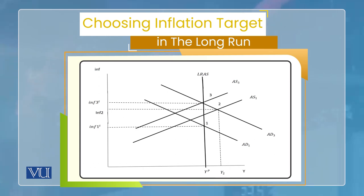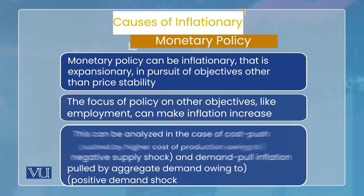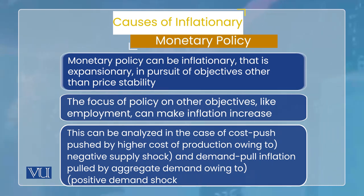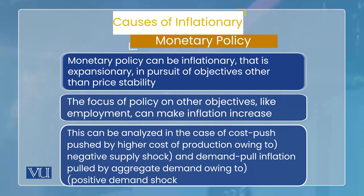Ab yeh clear ho gaya ke central bank kya kar sakta hai aur kya nahi. Ab dekhte hain ke inflationary monetary policy kab central bank ki ho sakti hai. Jab central bank ka prime concern inflation ka control hai, to inflation central bank ki apni policy se tab create hoga jab central bank ka focus inflation se hatt ke kisi aur variable — jaise exchange rate ya employment/unemployment variable — ki taraf chala jaye. Us target ko achieve karte karte ho sakta hai ke inflation ka target miss ho jaye, aur central bank ki apni policy ki wajah se economy mein inflation aa jaye.